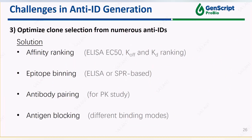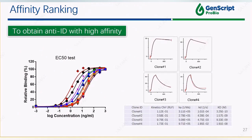We also recommend to optimize the selection of anti-ID based on the requirement of the final application through a series of assays including affinity ranking, epitope binning, antibody pairing, and antigen blocking. To obtain high affinity anti-idiotype monoclonal antibody, affinity ranking can be achieved by a simple ELISA-based EC50 test, which is relatively cheaper, or through SPR-based off-rate comparison.